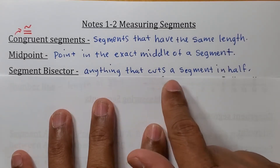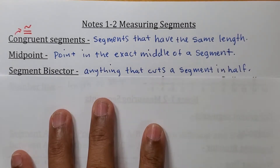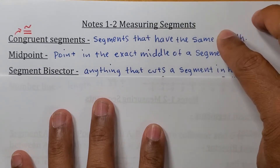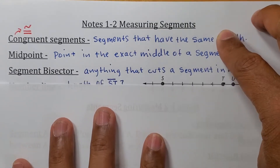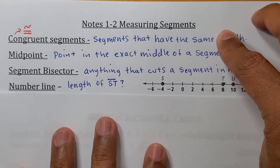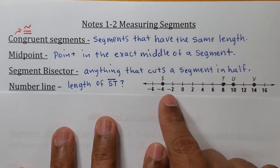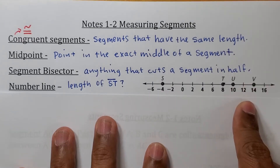The next term is a segment bisector. A segment bisector is anything that cuts a segment in half.